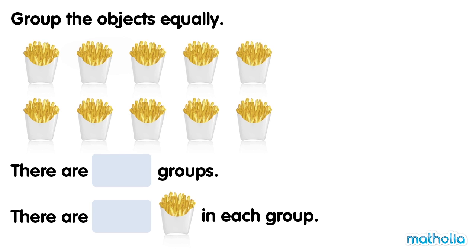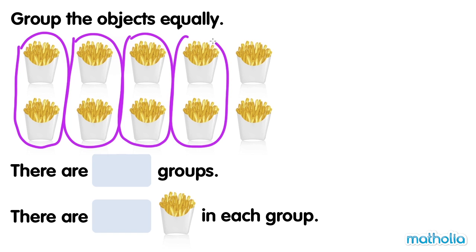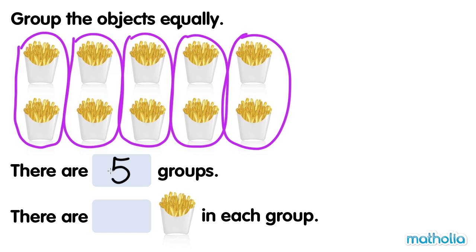Now let's make groups of 2. 1, 2, 3, 4, 5. There are 5 groups. There are 2 boxes of french fries in each group.